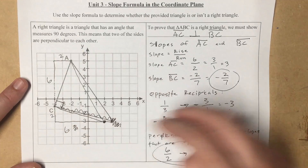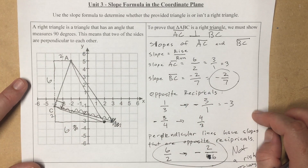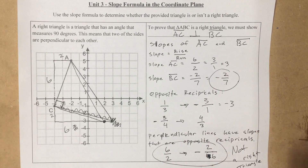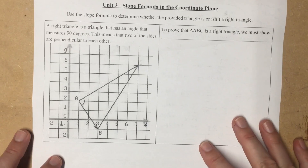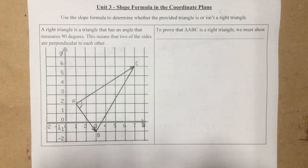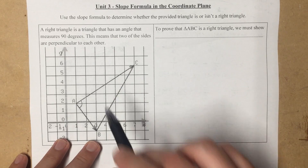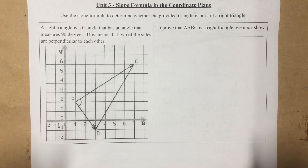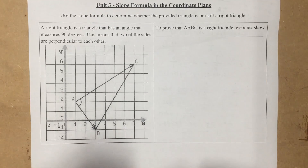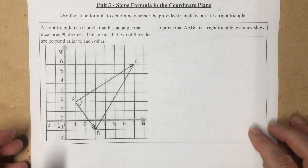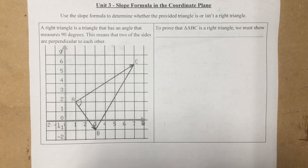In this case it was not a right triangle — it sure looked like it was, but we showed that it wasn't, because the slopes are not opposite reciprocals. On the back side, you have a very similar problem: use the slope formula and opposite reciprocals to show whether or not that triangle is or is not a right triangle.